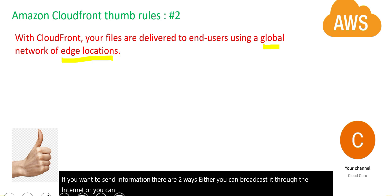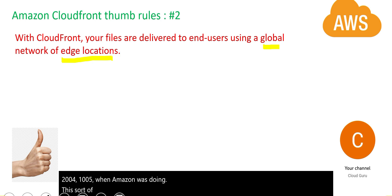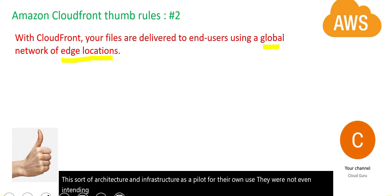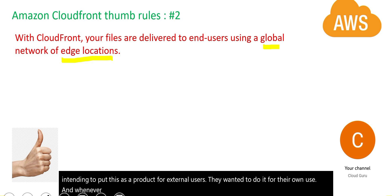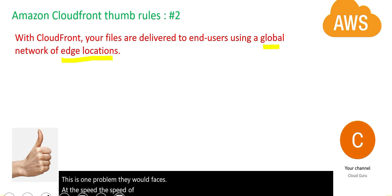Either you can broadcast it through the internet, or you can use edge locations. When cloud was invented around 2004–2005, Amazon was doing this sort of architecture as a pilot for their own use. When they were building it commercially for external clients, one problem they anticipated was the speed of data transfer. To address that, they decided to put up a global network of edge locations.